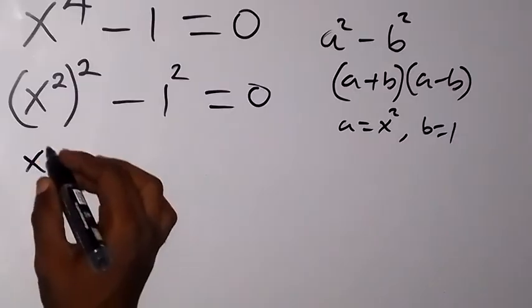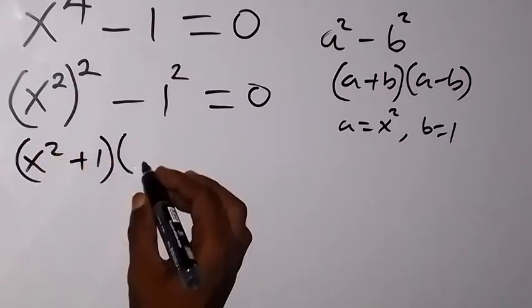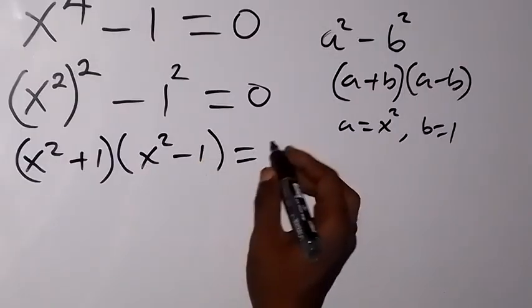So we then have x square plus 1, then multiply by x square minus 1, will then be equal to 0.